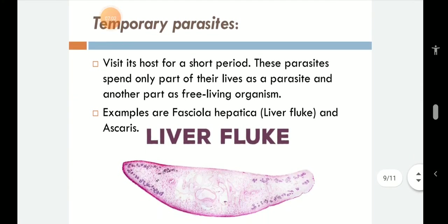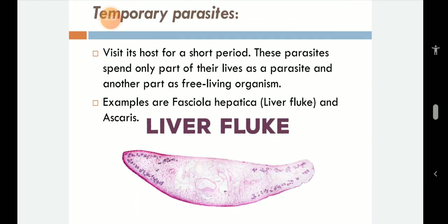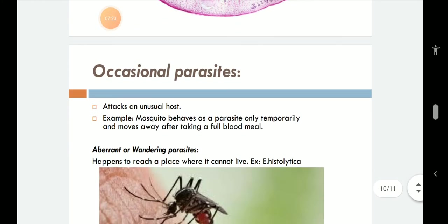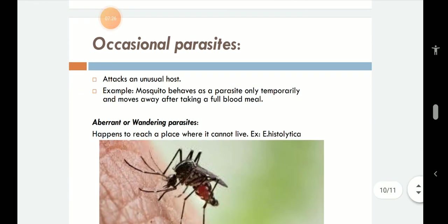Some temporary parasites visit their host for only a very short period of time. These parasites spend only part of their lives as a parasite and another part as a free-living organism — they can also be facultative type. An example is Fasciola hepatica, also called the liver fluke, and Ascaris. Occasional parasites attack an unusual host; for instance, mosquitoes behave as a parasite only temporarily and move away after taking a full blood meal.